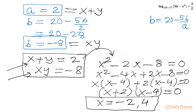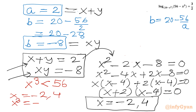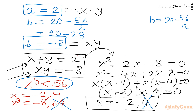We check against our domain conditions: x³ must be less than 56. For x = -2, x³ = -8 ✓. For x = 4, x³ = 64, which violates x³ < 56, so we reject x = 4. Therefore the only real solution satisfying the log equation is x = -2.